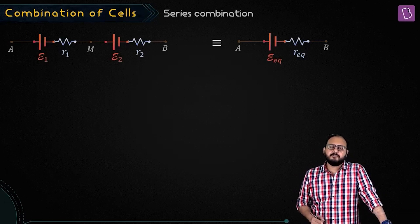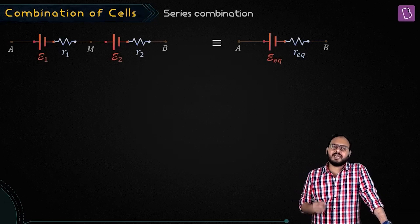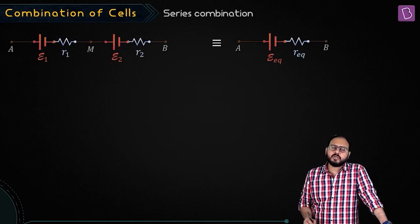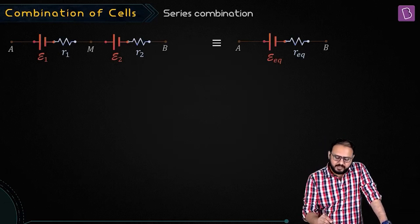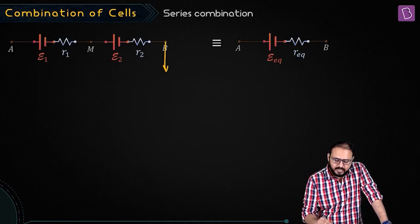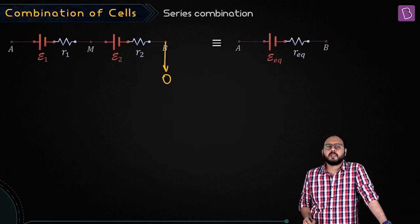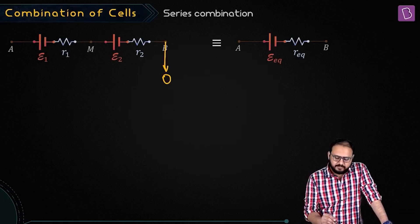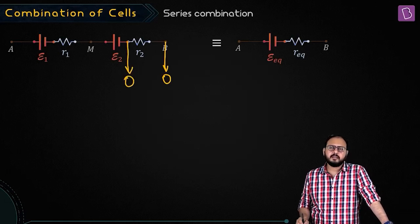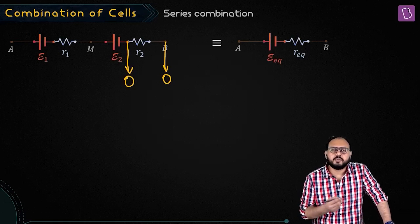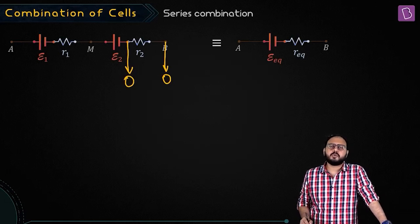So basically, when it is not in use, whatever is the potential difference between the two points is the equivalent EMF. That means, let this be zero. If this is zero, is this also zero? Student: Zero. Why? Because it is not being used. There is no current, so there is no drop across the resistor.